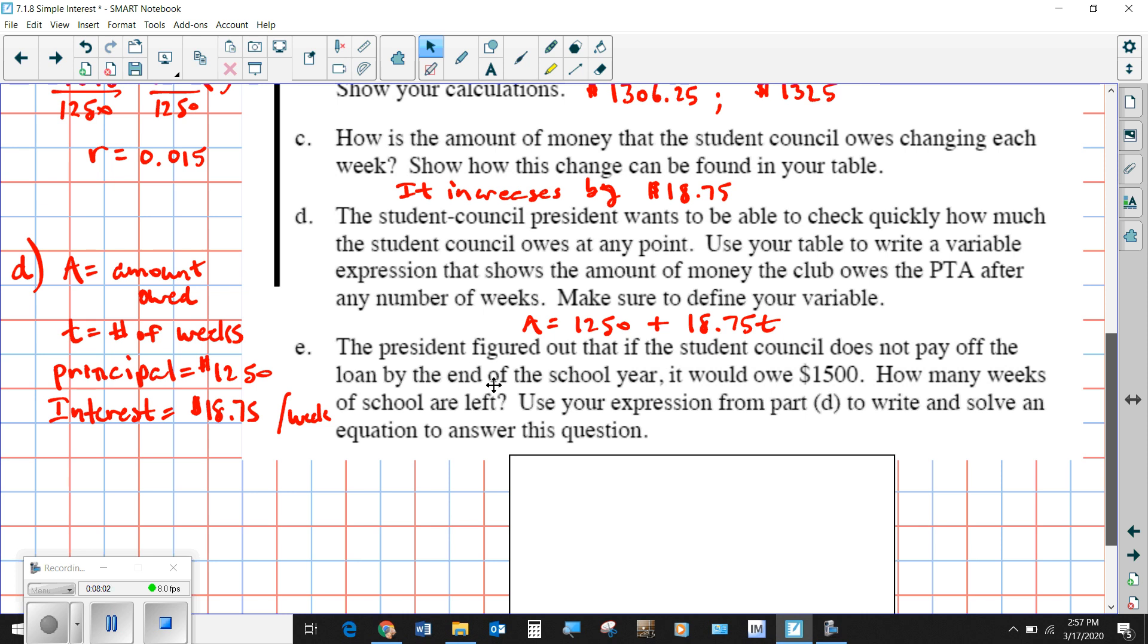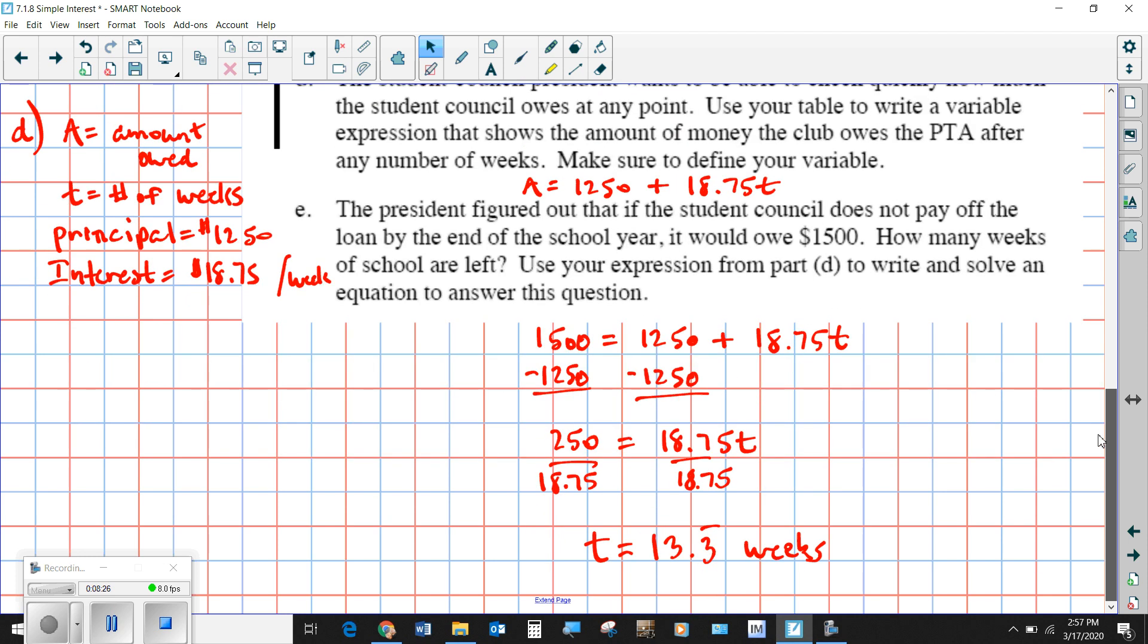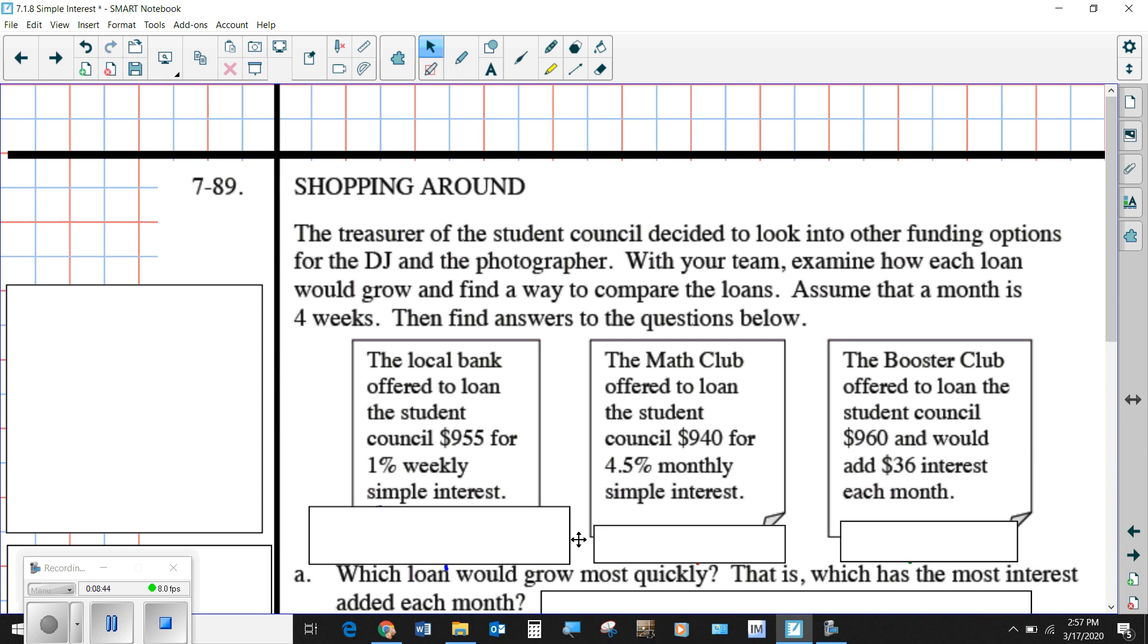Problem E is kind of complicated, but we're just going to use this formula. The president figured out that if the student council does not pay off the loan by the end of the school year, it would owe $1,500. So how many weeks is that? Now we can put in the $1,500 for the amount and then use our algebraic solving ability to solve for T, which will tell us the number of weeks. We'd subtract $1,250 from each side. Then we would divide each side by $18.75. What we end up with for T, which is the number of weeks, would be 13.3 repeated. So between 13 and 14 weeks is how long it would be so that they would owe $1,500. Once again, if I'm going super fast, which I know I am, please pause and back up and re-listen or work through it to the best of your ability and then come back and see if you're getting it right.